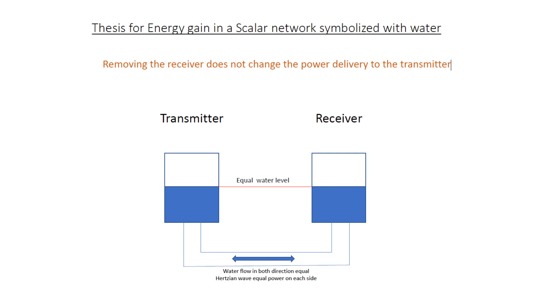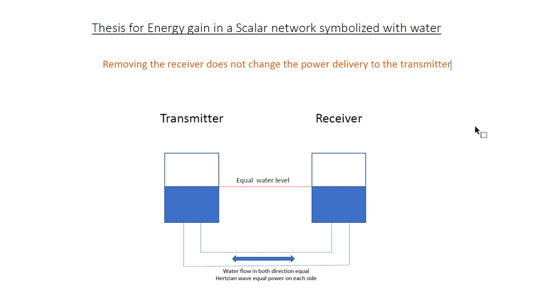Here in this first example we see a tuning to the resonance frequency and that is the Hertzian frequency. The pressure is on both sides the same and we have a balanced power on both coils. In the second picture, we are out of tune below the Hertzian frequency. We consume and reflect all the power we are transmitting back to the amplifier. The receiver has no impact regardless if we connect it or not. Technically we are having all the power on the transmitter and nothing goes to the receiver.